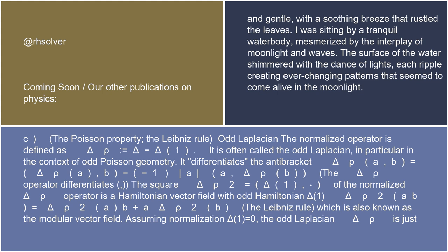{A,B} = −(−1)^(|A|+1)(|B|+1) {B,A} — skew symmetry. The Jacobi identity reads (−1)^(|A|+1) {A,{B,C}} + (−1)^(|B|+1) {B,{C,A}} + (−1)^(|C|+1) {C,{A,B}} = 0. The Poisson property (Leibniz rule): {A, BC} = {A,B}C + (−1)^(|A|+1)|B| B{A,C}. The normalized operator (odd Laplacian) is defined as delta_rho = delta − delta(1). It differentiates the antibracket: delta_rho{A,B} = {delta_rho A, B} − (−1)^|A| {A, delta_rho B}. The square delta_rho² = delta(1) — the square of the normalized delta_rho operator is a Hamiltonian vector field with odd Hamiltonian delta(1).